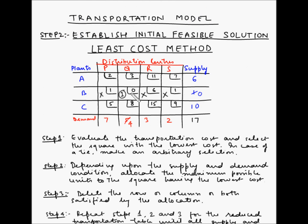Now we have the reduced transportation table and we go to step 1 again, which is to evaluate the transportation cost and select the square with the lowest cost. From the remaining squares, the lowest cost is for square AP. Step 2 says depending upon the supply and demand condition, allocate the maximum possible units to the square having the lowest cost. For AP, the supply available is 6 units whereas the demand is 7 units. The maximum allocation will be 6 units, because you cannot supply more than 6 units even though P has a demand of 7 units. So we allocate 6 units to AP.